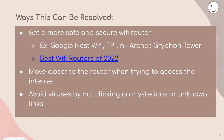There are a few ways this issue can be resolved. Firstly, get a more safe and secure Wi-Fi router — for example, a Google Nest Wi-Fi, TP-Link Archer, or a Griffin Tower. There's a link to a website for the best Wi-Fi routers of 2022 that a volunteer can send in the chat. You can also try moving physically closer to the router to strengthen the connection, or avoid viruses by not clicking on mysterious or unknown links.